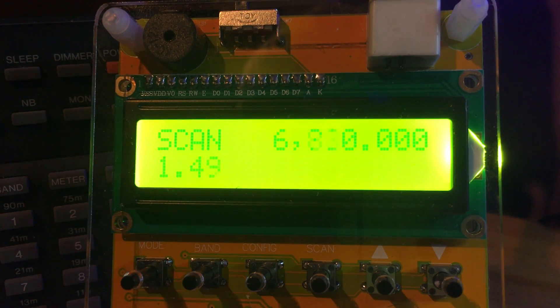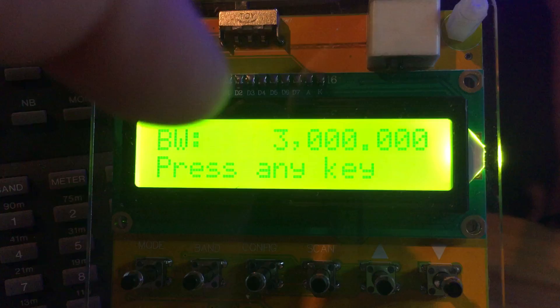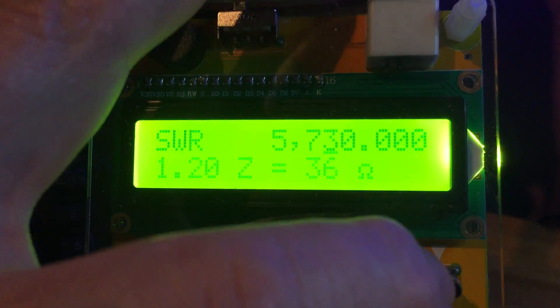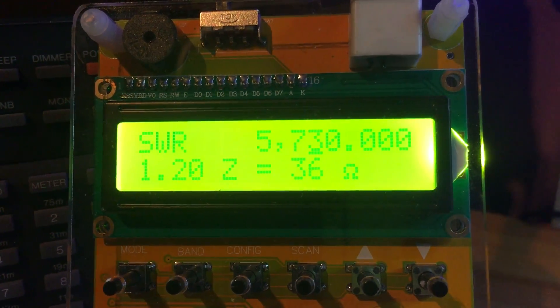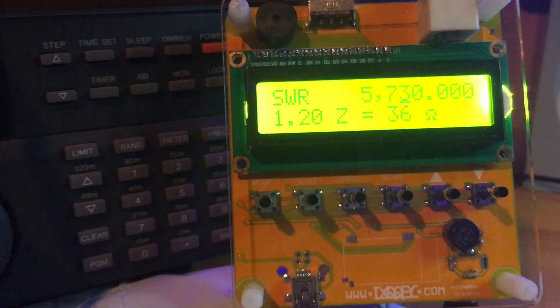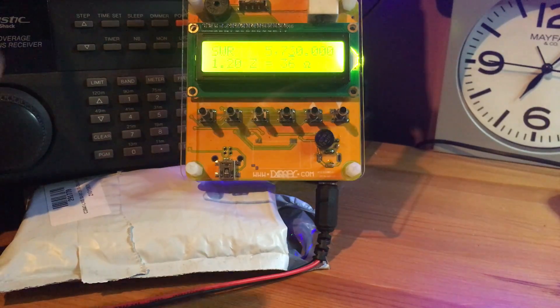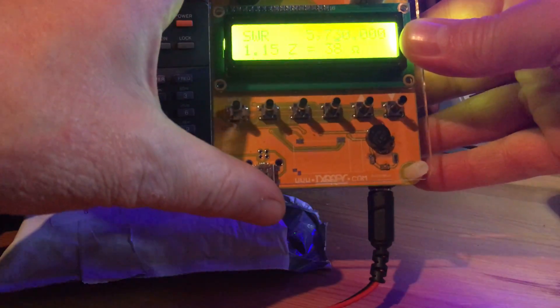Again, looking at the SWR reading, that's pretty good. It's not bad at all. You've got bandwidth of 3 megahertz that it's just tested, and your most resonant frequency is 5.730 at 1.2 SWR, 36 ohms impedance. So there we go guys, not bad at all.